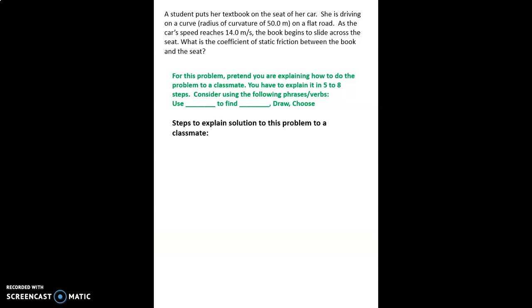In this problem we're looking at a textbook that's sitting on the seat of a car and the book is not sliding relative to the seat. The book is in motion but it's not sliding. Once the speed of the car gets to 14 meters per second, that's when the book begins to slide and we're supposed to determine the coefficient of static friction between the book and the seat.